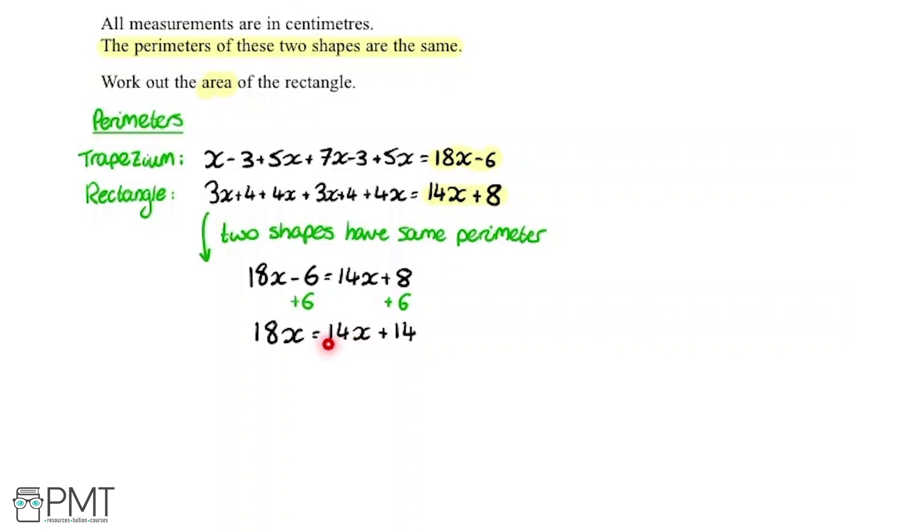Now I'm going to subtract 14x from both sides. On the left hand side we're going to be left with 4x. On the right hand side we're going to have no x's left and just 14.